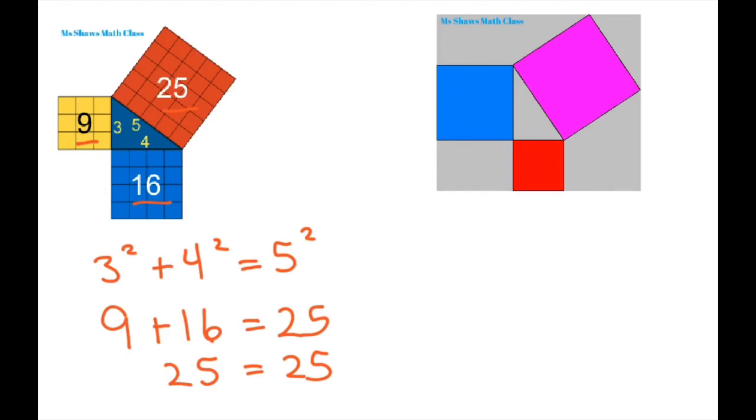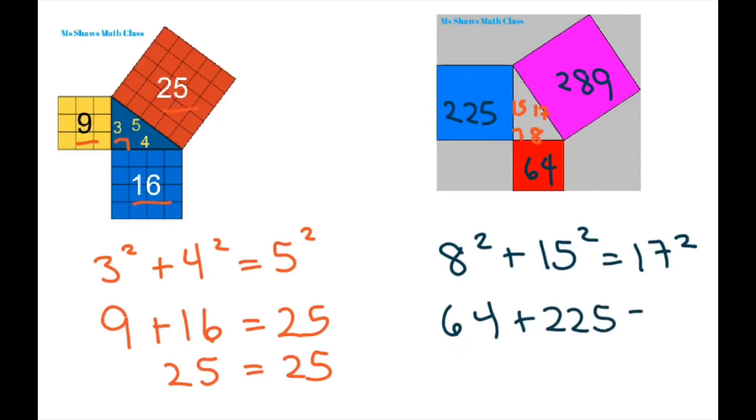So let's try 8, 15, and 17. I'm going to put the 8 here, 15 here, and 17. Remember the largest number always goes across from the right angle here. So we're going to square these. 8² is 64, 15² is 225, and when you add these up, you get 289. So 17² is 289. Again, 8² + 15² = 17², or 64 + 225 equals 289.